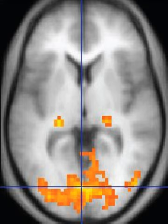Magnetic resonance imaging is a medical application of nuclear magnetic resonance (NMR). NMR can also be used for imaging in other NMR applications such as NMR spectroscopy. While the hazards of X-rays are now well controlled in most medical contexts, an MRI scan may still be seen as a better choice than a CT scan. MRI is widely used in hospitals and clinics for medical diagnosis, staging of disease and follow-up without exposing the body to radiation.